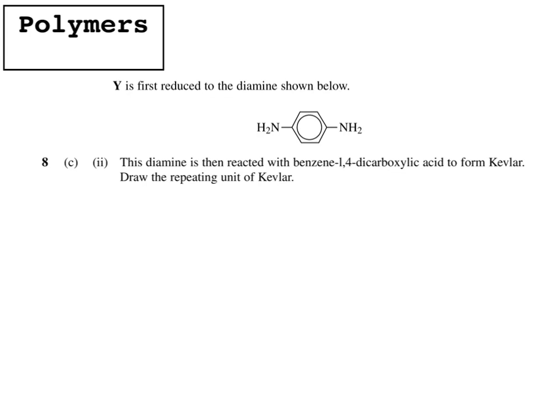So here's a past paper question on drawing polymers. So we've got a diamine that's been drawn for us, and that is reacting with benzene 1,4-dicarboxylic acid. So the first thing we've got to do is draw this out so we know what we're dealing with. So what that is is benzene, so a benzene ring, and we've got two carboxylic acid groups, so COOH, on the first and fourth carbon.